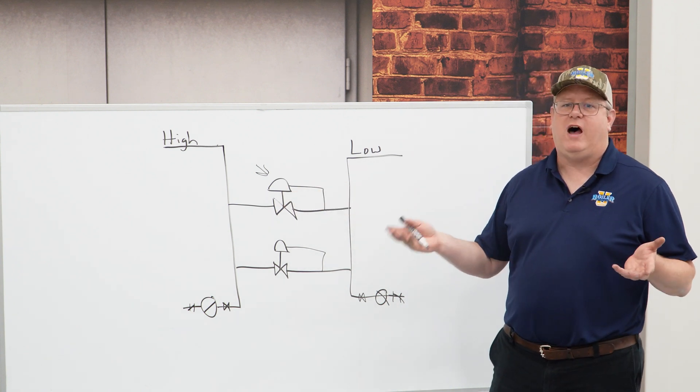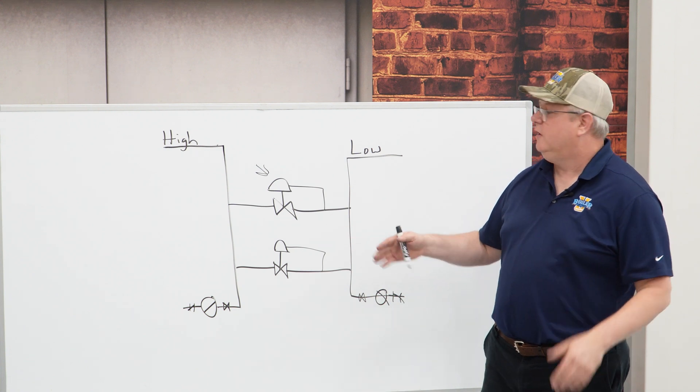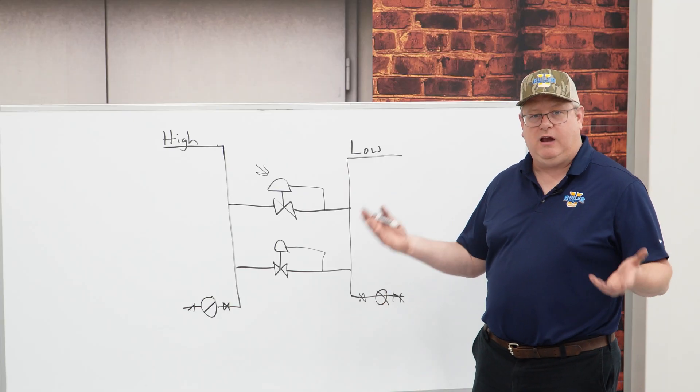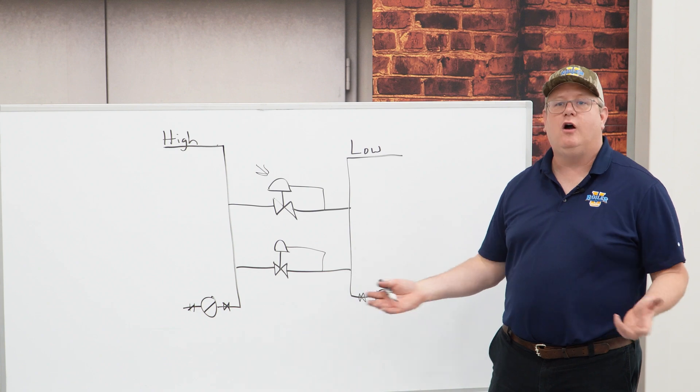So usually five percent, ten percent difference in the outlet settings will give us operation of the small one until it can't really satisfactorily carry the load anymore, and then our main valve's going to take over from that.